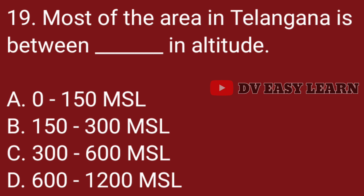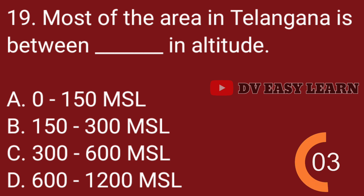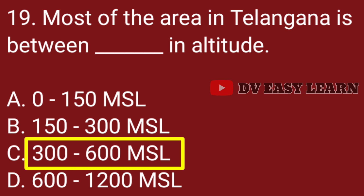Question no. 19. Most of the area in Telangana is between what altitude? Correct answer: 300 to 600 metres.